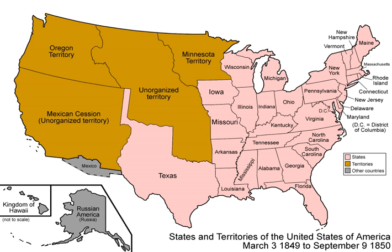The extension of the Missouri Compromise Line was proposed by failed amendments to the Wilmot Proviso by William W. Wick and then Stephen Douglas to extend the Missouri Compromise Line 36 degrees 30 parallel north west to the Pacific, south of Carmel-by-the-Sea, California, to allow the possibility of slavery in most of present-day New Mexico and Arizona, and Southern California. That line was again proposed by the Nashville Convention of June 1850.